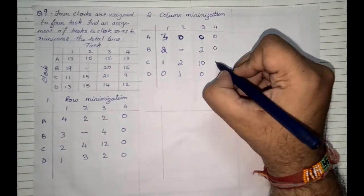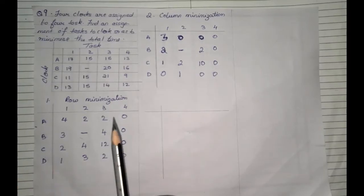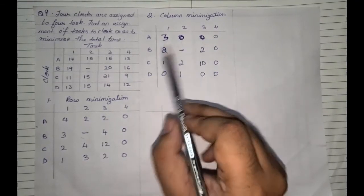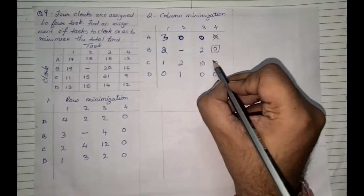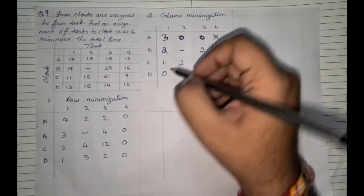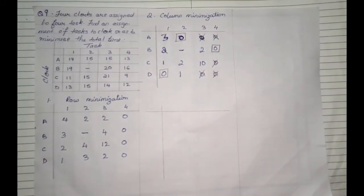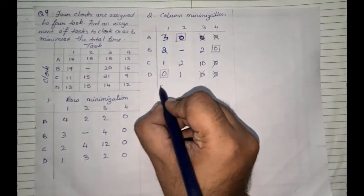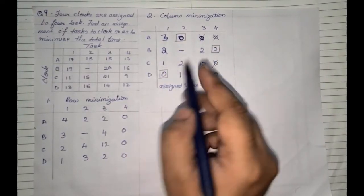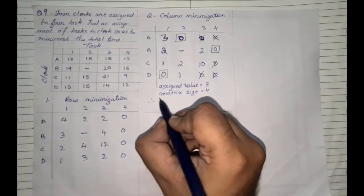Once column minimization is done, we proceed to assigning values. Row wise, we select rows that have only one 0. In the first row there are 3 zeros — cannot mark. In the second row there is only 1 zero — we mark it, and all other subsequent zeros get crossed out. Third row has none; fourth has 2 zeros. Going column wise: first column has 1 zero — we mark it; second has 1 zero — we mark it. The number of assigned values is 3, but matrix size is 4, therefore the solution is not optimal.